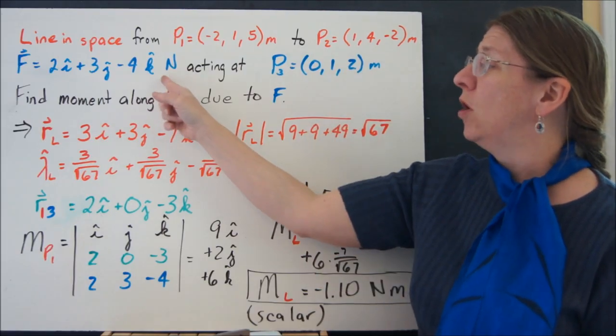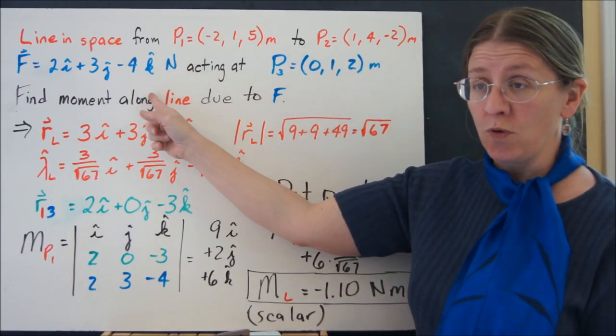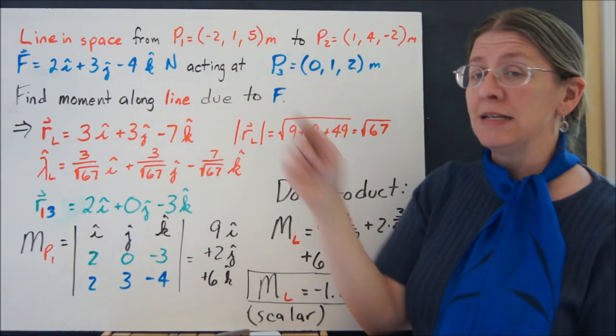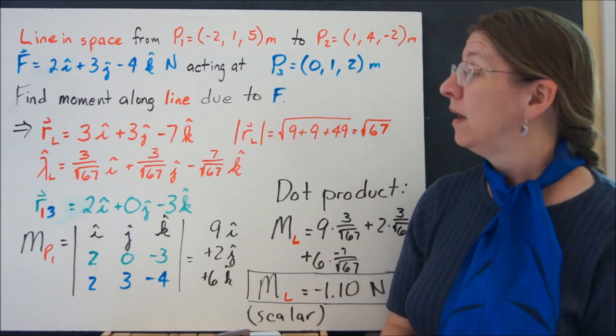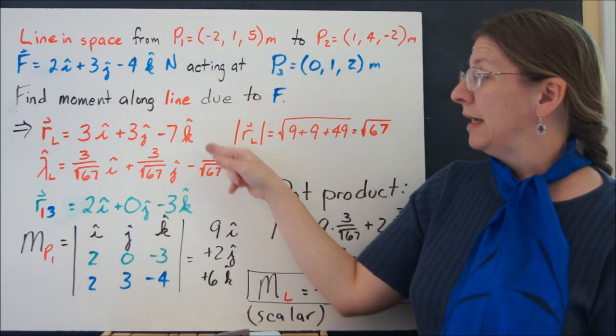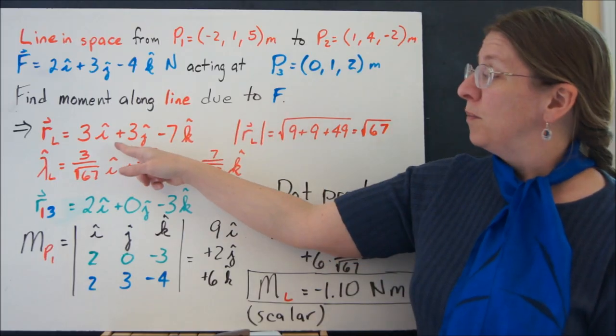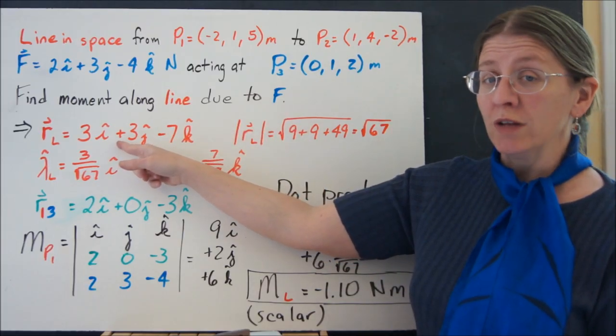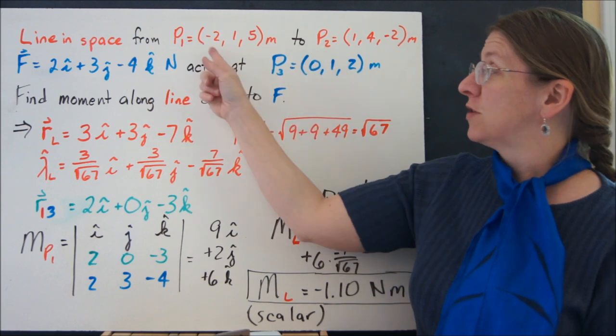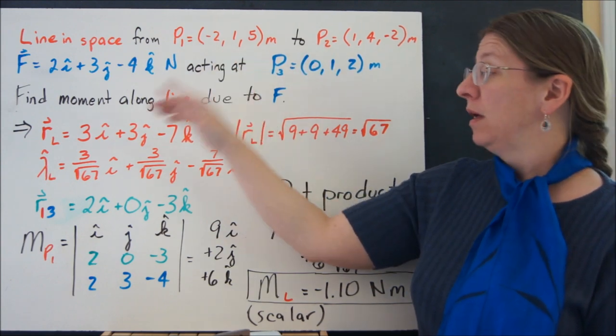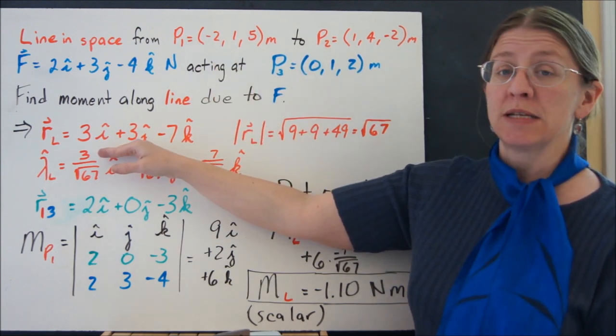I want to know how much of the moment caused by this force lies along that line. The position vector along the line is P2 minus P1, which gives me 3i plus 3j minus 7k.